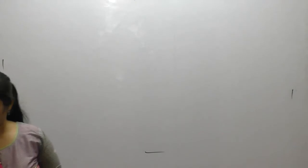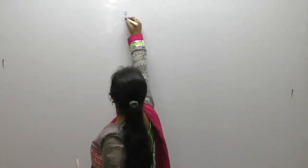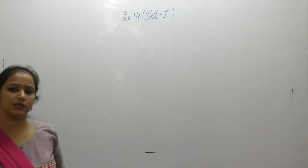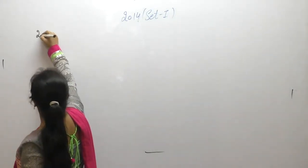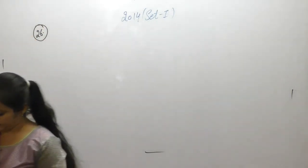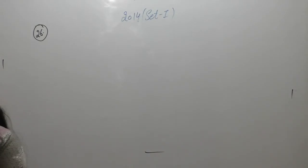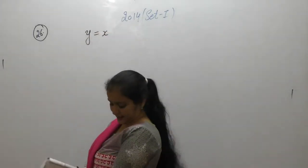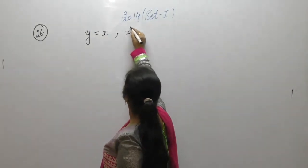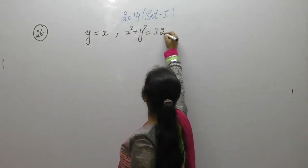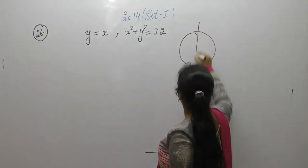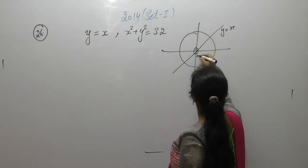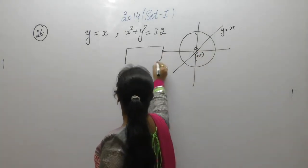Hello students, we were doing the question paper of year 2014, set one. We have finished questions up to question number 25. Now let us start with question number 26. The statement is: find the area of the region in the first quadrant enclosed by the x-axis, the line y equals x, and the circle x² + y² = 32. The line y = x passes through the origin.